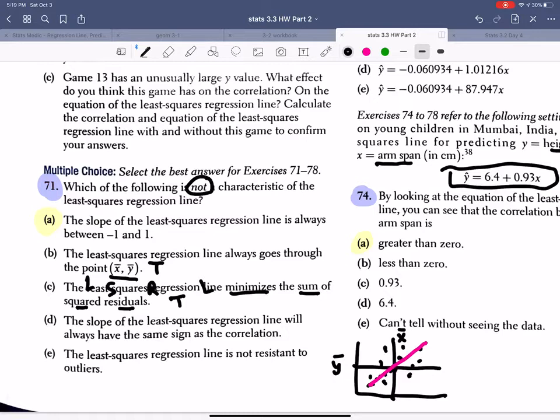The slope of the least-squared regression line will always have the same sign as the correlation. So let's say this is about correlation of maybe 0.79. Then we know that the slope, whatever it is, is positive and vice versa. So that would mean if the correlation is positive, then the slope is positive. Or if the correlation is negative, then the slope is negative. So this is a true statement. They have the same sign.